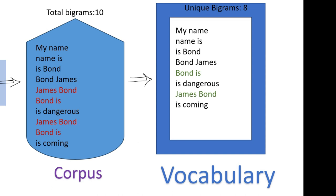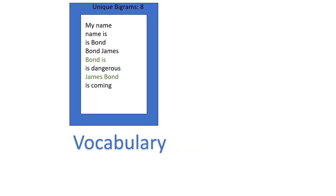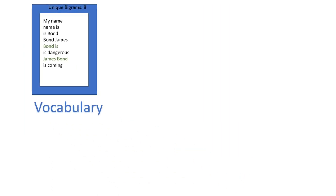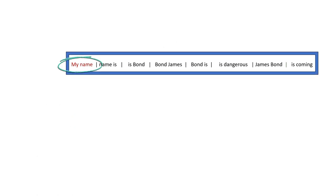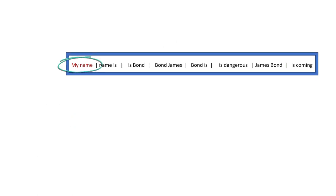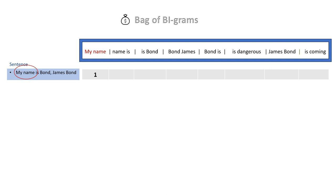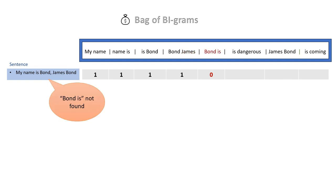The rest of the process is the same as bag of words. We always start with the vocabulary, pick the first bigram, and then search for it inside our document or sentence. We write 1 if it is present once, 2 if twice, and 0 if it is absent. Notice that the order of words is important — 'bond james' is not the same as 'james bond'.